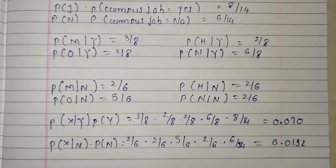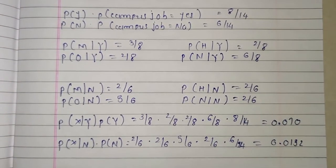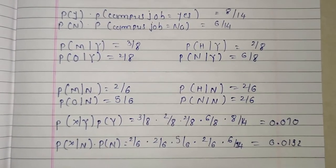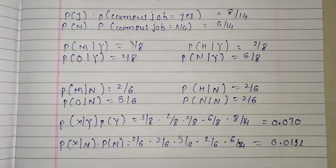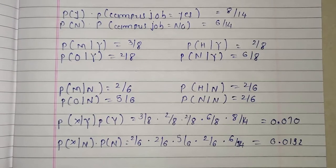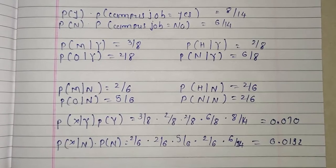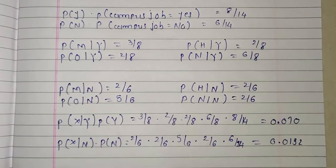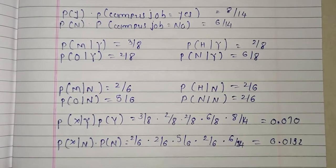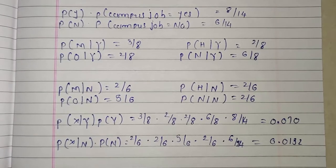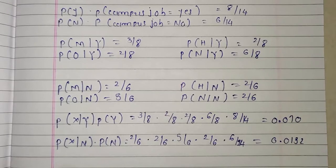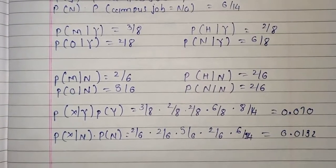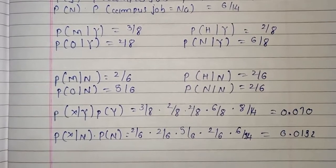For class level no, we consider the same 4 attributes. P(X|N) into P(class level no) equals 2 by 6 (college grade medium, class no) into 2 by 6 (school grade high, class no) into 5 by 6 (gender female, class no) into 2 by 6 (sports interest no, class no) into 6 by 14 (probability of class level no) equals 0.0132. Since the probability of yes is less than class no, the class label for this data sample is no.